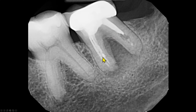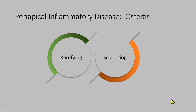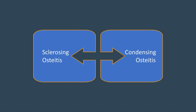The disease process is periapical inflammation of the bone — we will call this osteitis. As we saw on the radiograph, there are two types of findings: a radiolucency and a radiopacity. The radiolucent area is called rarefying osteitis, and the dense area is called sclerosing osteitis. Many clinicians will use the term condensing osteitis in place of sclerosing osteitis — these two terms are synonymous.